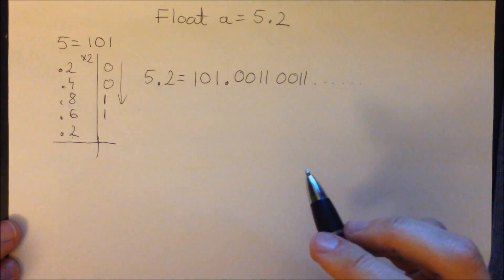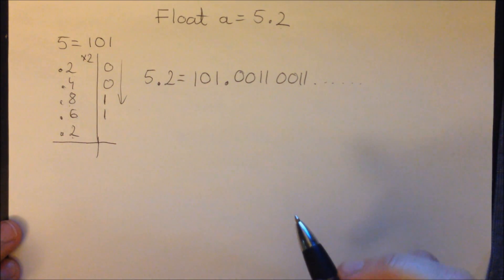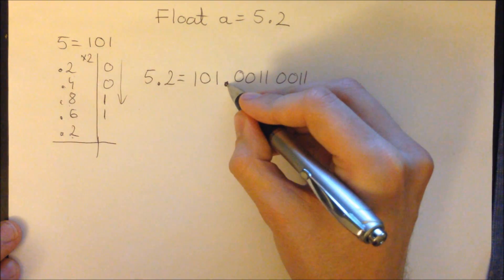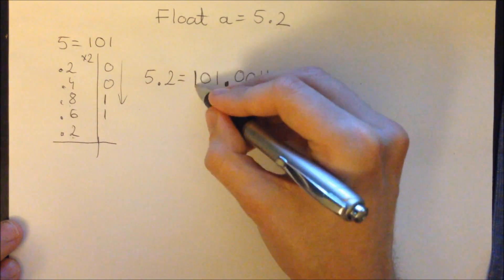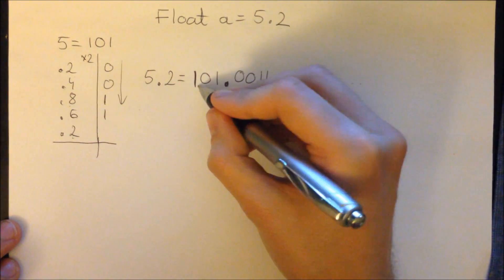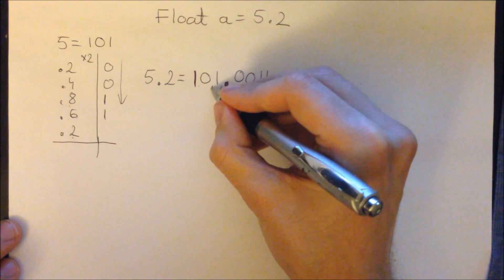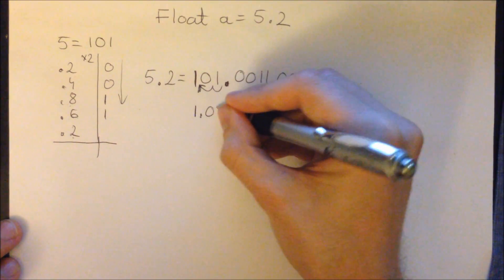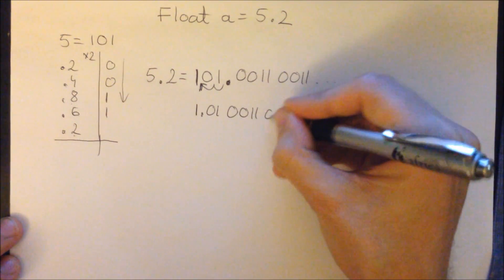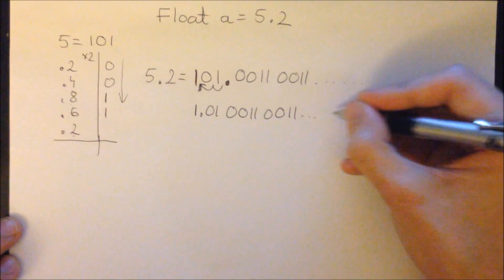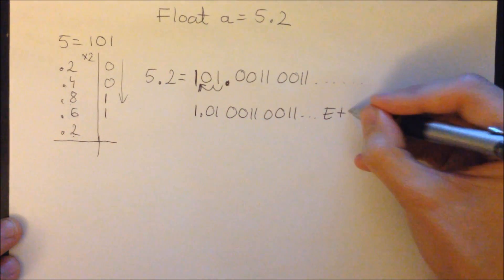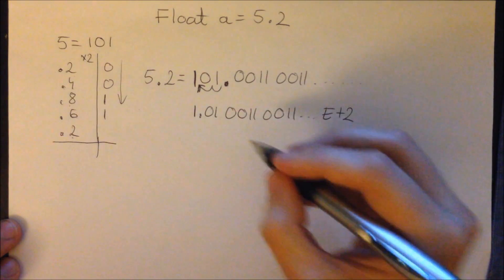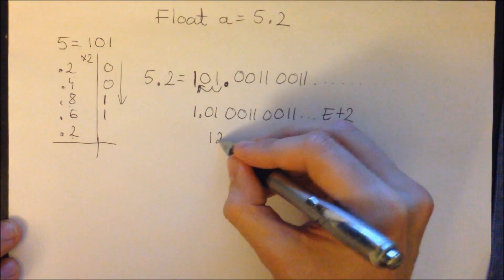Now we are converting this to the floating point representation. The first step is moving the dot just before the very first 1. We are moving it by two positions, giving us 1.0100110011... and so the exponent is plus 2.